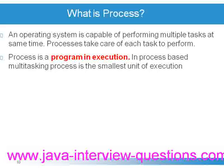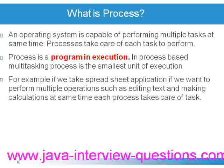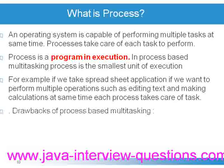We can define a process as a program in execution. In process-based multitasking, the process is the smallest unit of execution. The operating system will allocate memory and time to the smallest unit — the process. So each process will have a particular amount of time, and all processes will run in parallel, each taking care of a task such as editing text or making calculations at the same time.